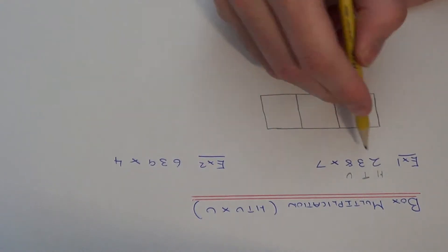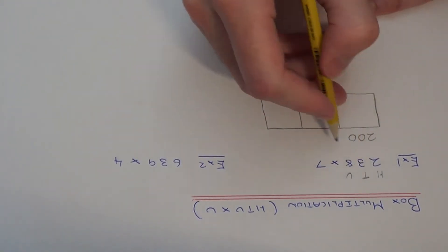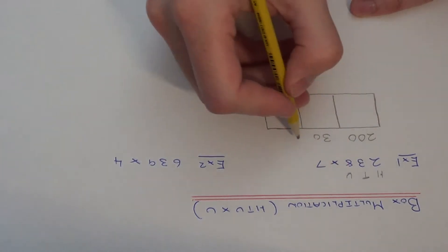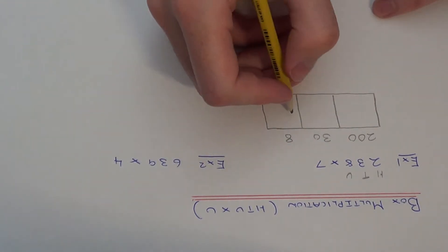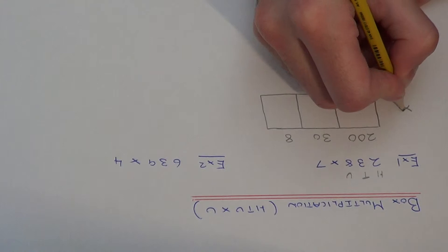So we've got 200, three tens which is 30, and 8 units, and the number we're multiplying by 7, so write this at the side.